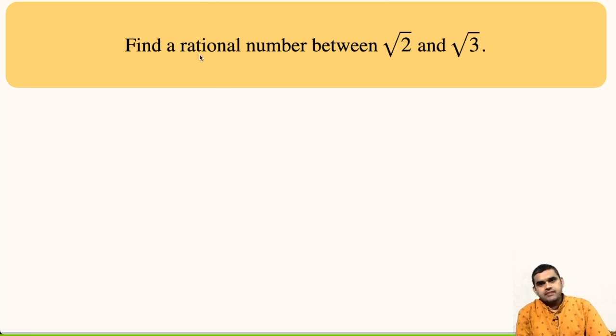Here, we have to find a rational number between two irrational numbers, that is root 2 and root 3.